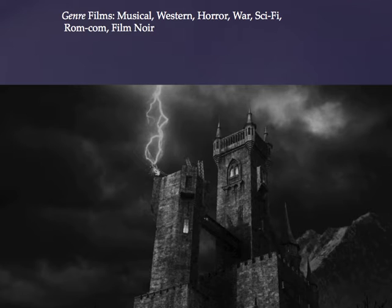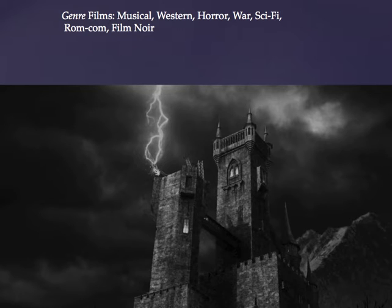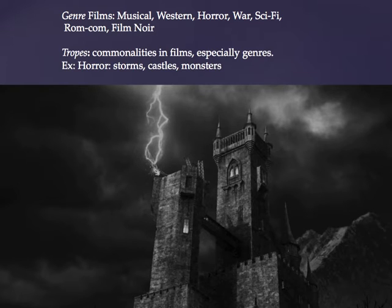A genre is a nice French word — we have lots of nice French words like femme fatale — and it simply means a grouping. Most genres came up in the silent era or just after it finished in the early 1930s, when we started getting musicals and classic horror movies like Frankenstein, Dracula, Bride of Frankenstein, The Invisible Man, The Mummy. Along with genres, we get tropes — commonalities that we see in films, especially genre films.